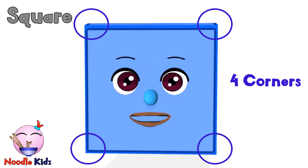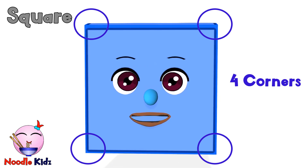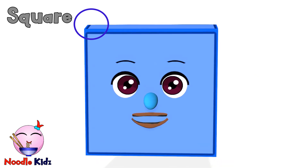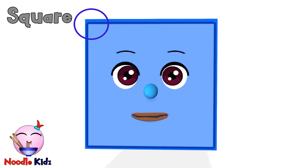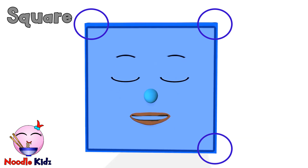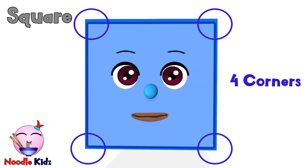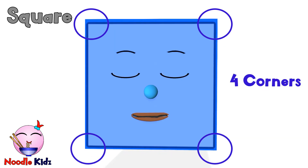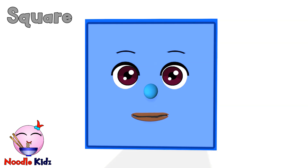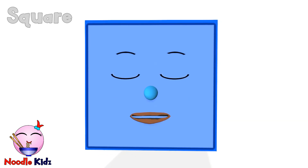I have 4 corners. Let's count together: 1 corner, 2 corners, 3 corners, 4 corners. Each angle is 90 degrees.